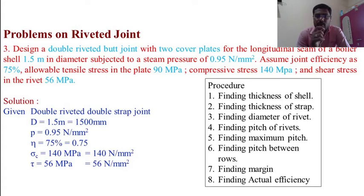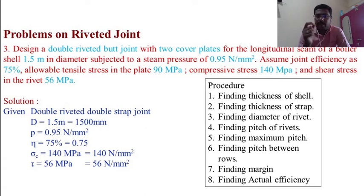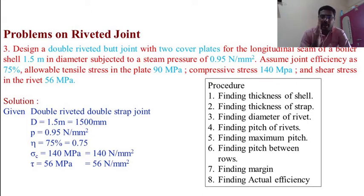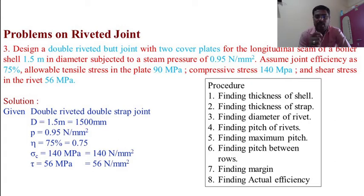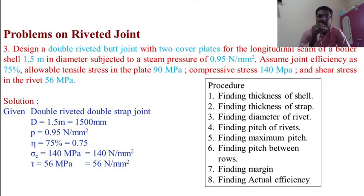The procedure to solve this problem: first, find the thickness of the shell; second, find the thickness of the strap; third, find the diameter of the rivet; fourth, find the pitch of the rivets; fifth, find the maximum pitch; sixth, find the pitch between rows; seventh, find the margins; and eighth, find the actual efficiency.